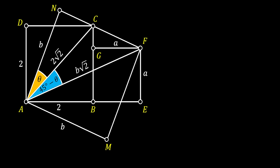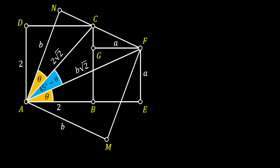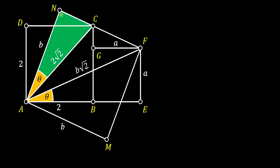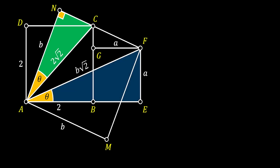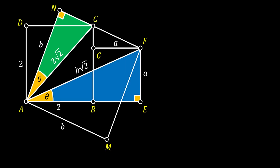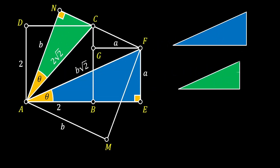We also know that the angle C, A, E must be equal to 45 degrees, because A, C is the diagonal of our bigger square. So the remaining angle F, A, E must be equal to theta again. Now let's look at the right-angle triangle A, C, N and also the right-angle triangle A, E, F. We will isolate those two triangles.